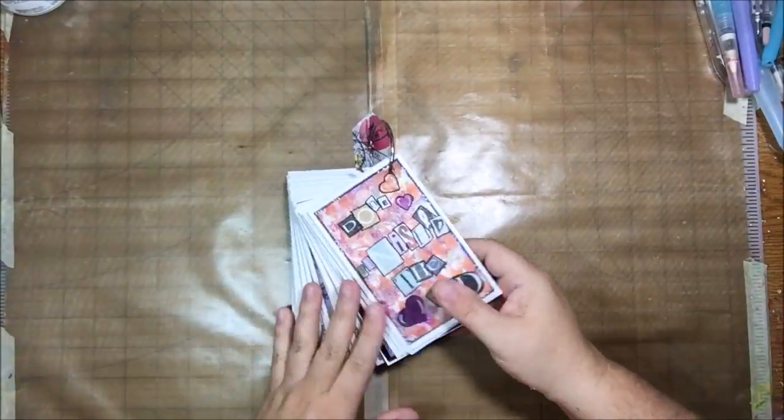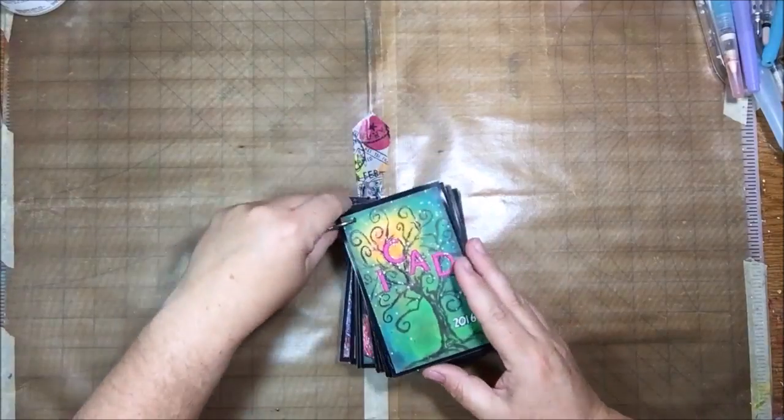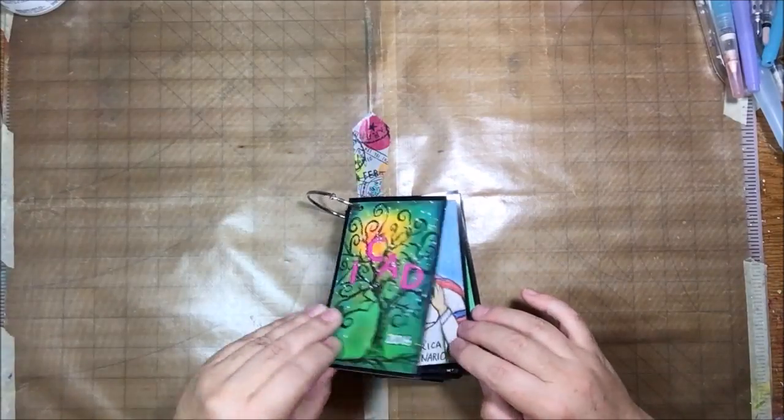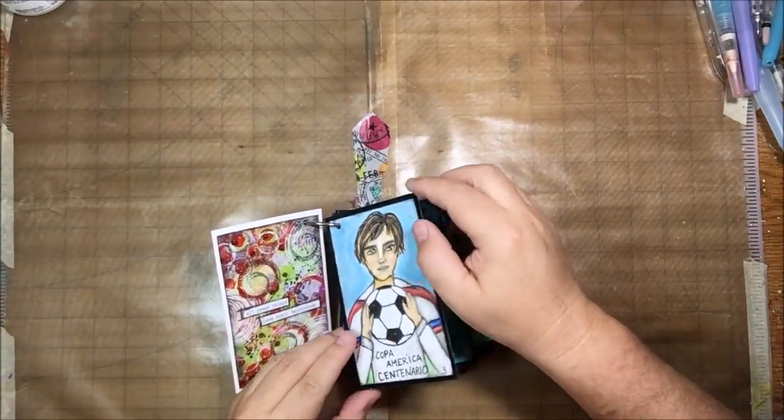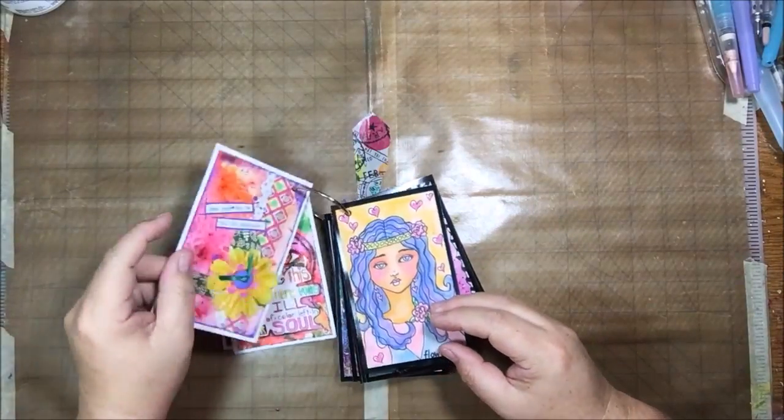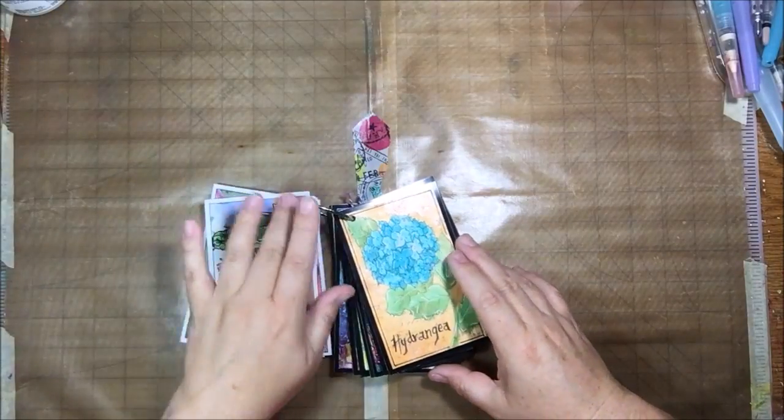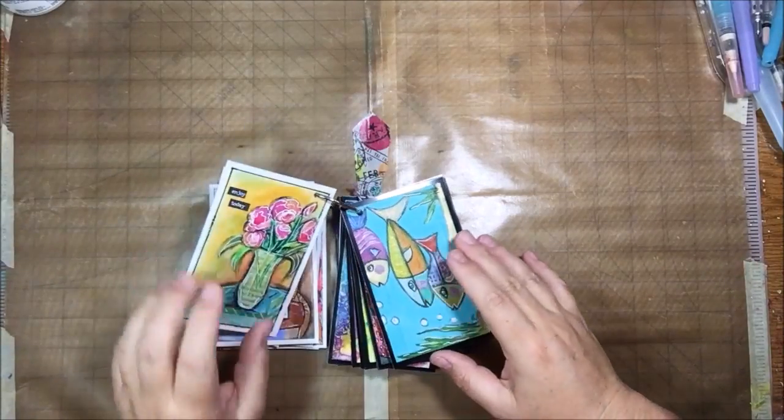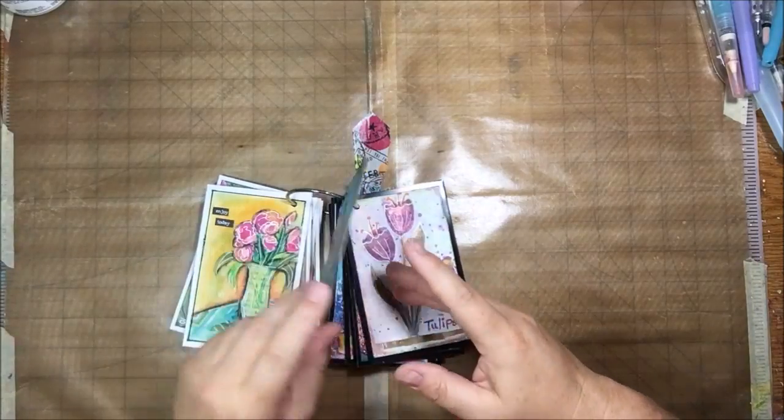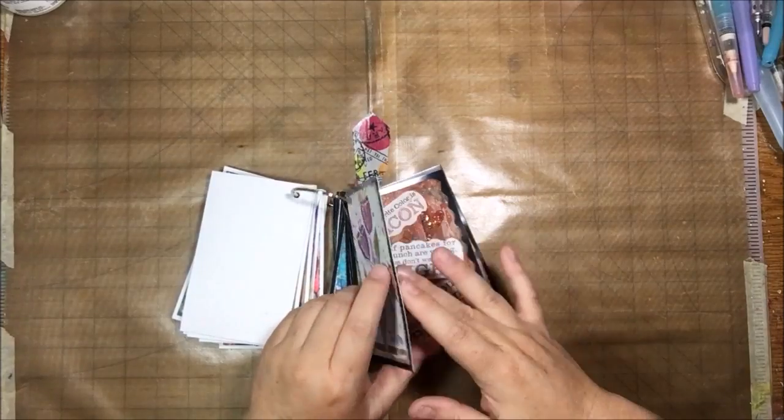And you just can flip through it by starting with number one and flipping through all the way through. Number 6 and number 45 are missing because I gave them away to followers. So it messed me up slightly but, leaving making them be empty, besides that everything is here. They're all done and this is a perfect way to store them.